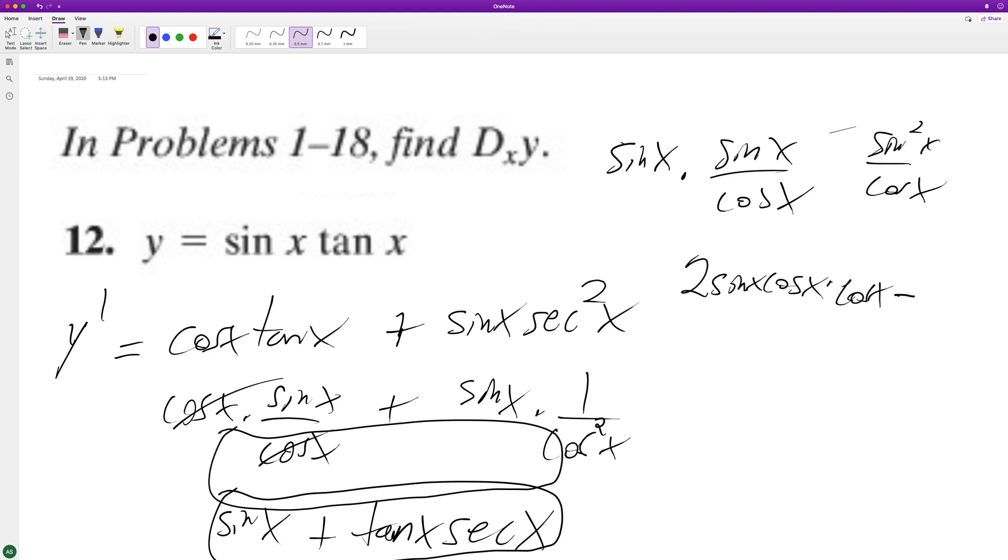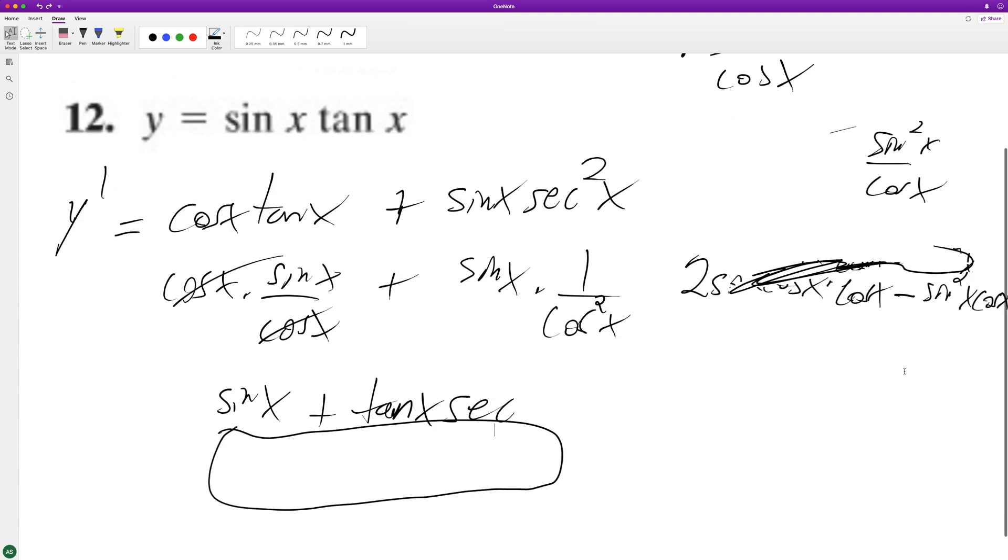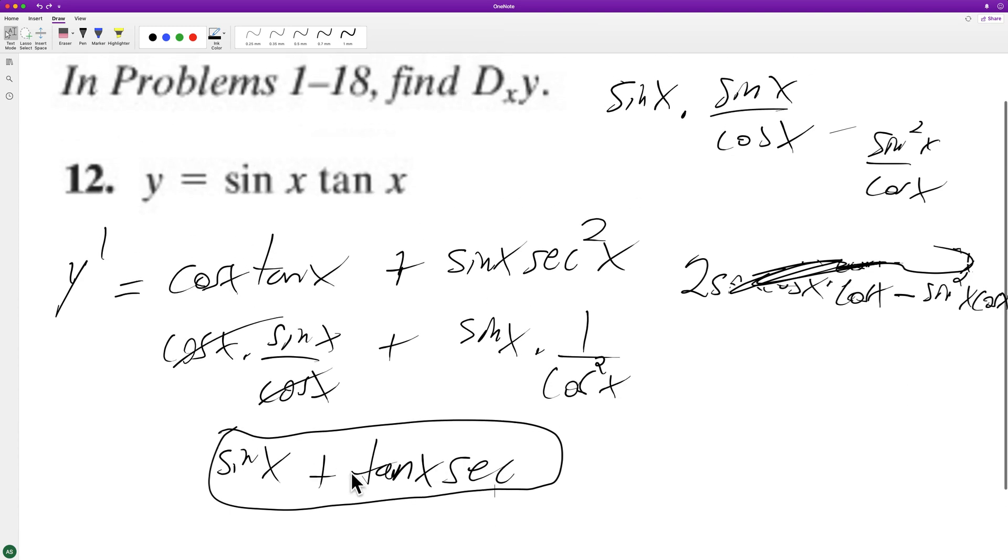And then minus sine squared x times cosine of x. Oh, it becomes negative sine cubed. I'm sorry. This whole thing's screwed up. That's pretty stupid. Well, all right, I'll just go with this. I'm sorry. All right. I hope I helped you out. Thanks.